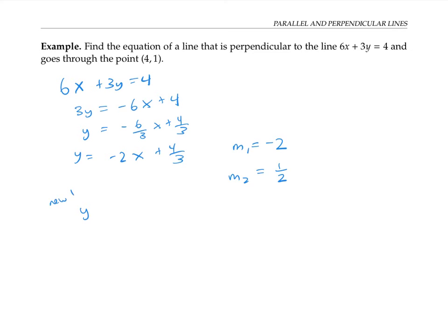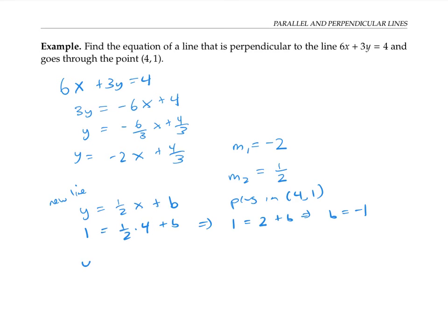My new perpendicular line will be y = (1/2)x + b for some b. Plugging in the point — one for y and four for x — and solving for b: 1 = (1/2)(4) + b, so 1 = 2 + b, meaning b is negative one. My new line has the equation y = (1/2)x − 1.